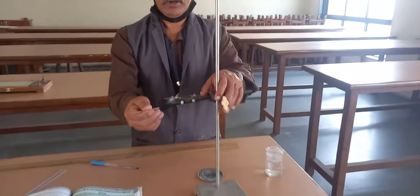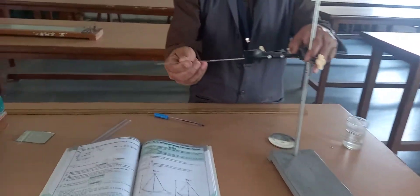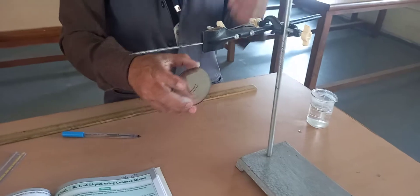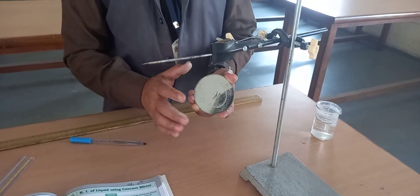The instruments we require are: a retort stand, an index pin (this is called index pin), a concave mirror (you observe here at the center there is depth), and liquid, which means water.